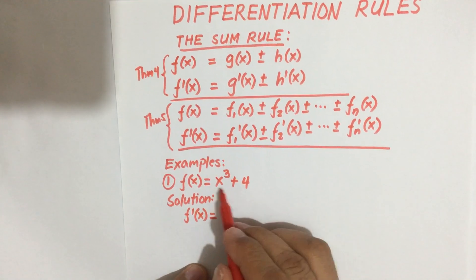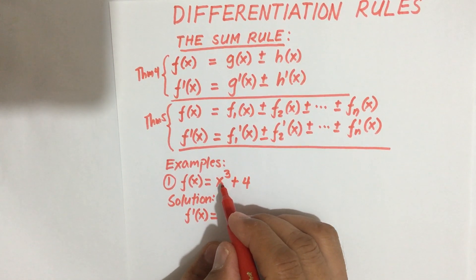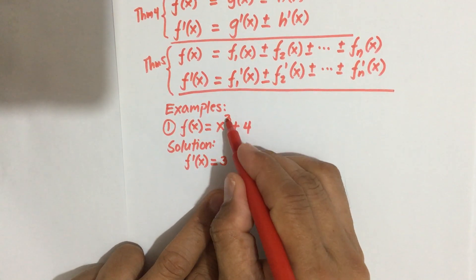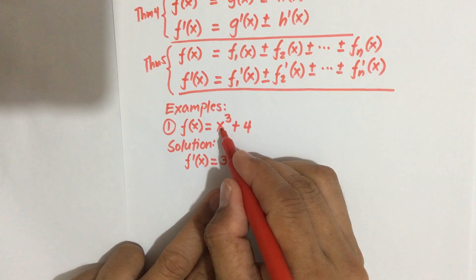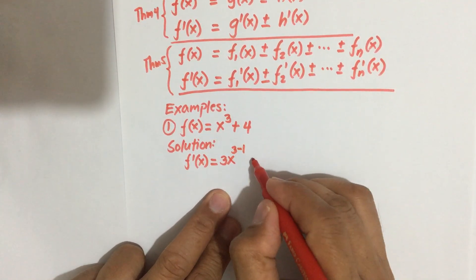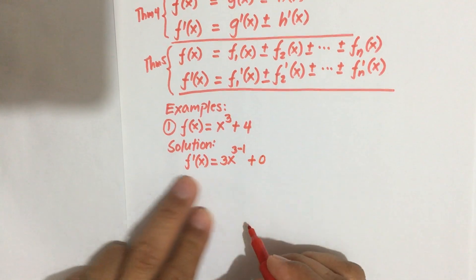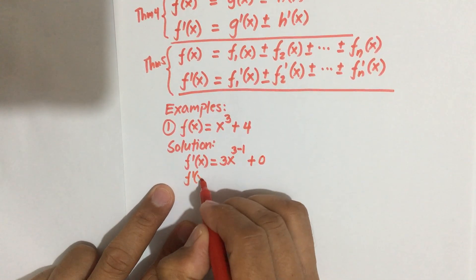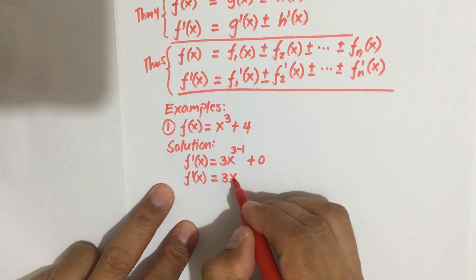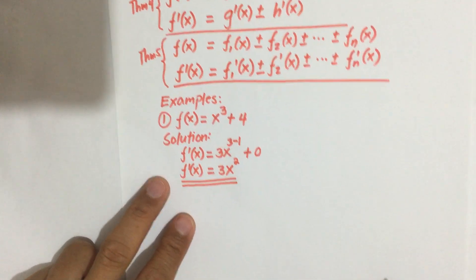For the first function, we use the power formula: bring down the power, which is 3, multiply it by the base x, then subtract the exponent by 1. The second part, 4, is a constant, so the derivative of a constant is always 0. Therefore f'(x) equals 3x to the power 3 minus 1, which is 3x squared. That is our answer.